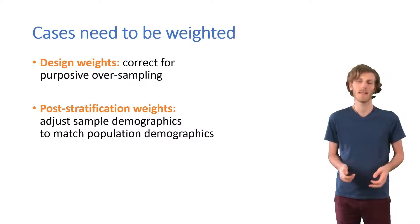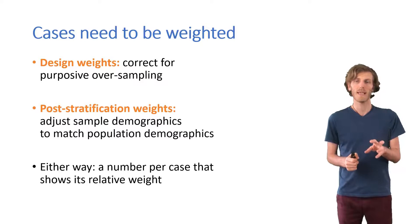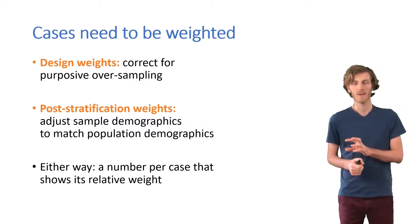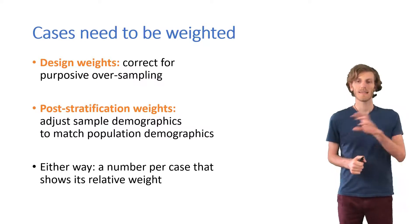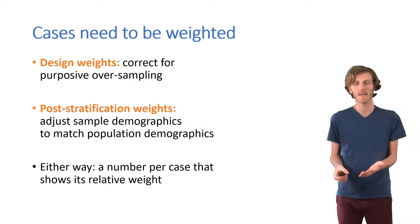In either case, what we get is one weight for each participant. And the sum of all the weights should be equal to our sample size. Because after weighting, the sum of all the weights is what will be reported and used as the new sample size. So ideally they should be the same.